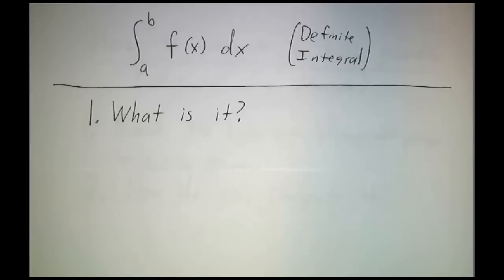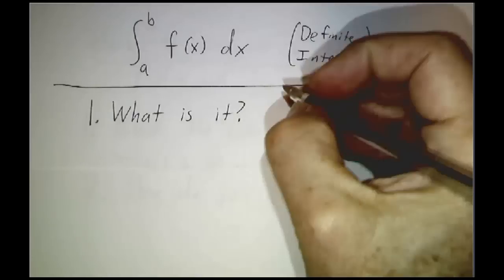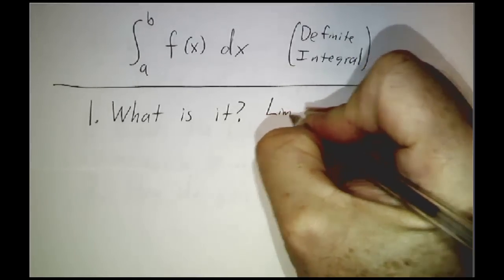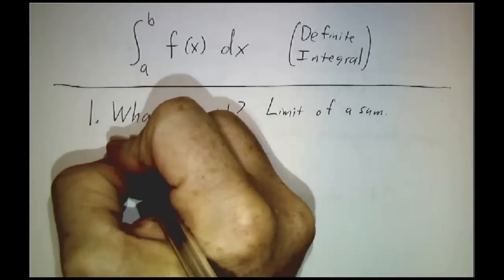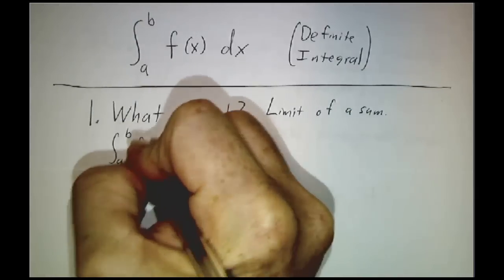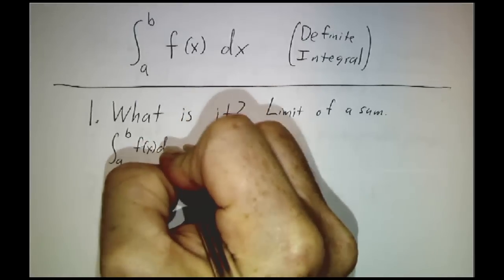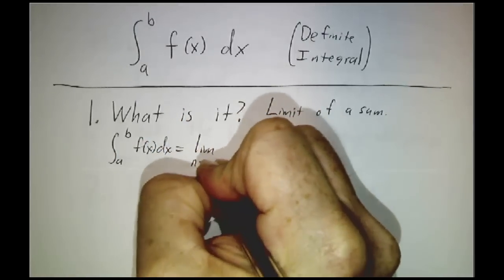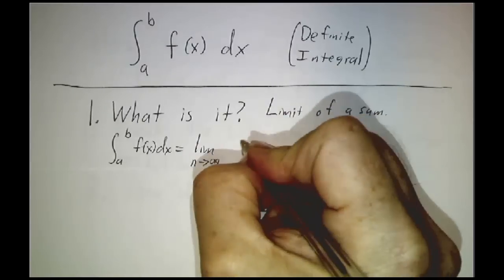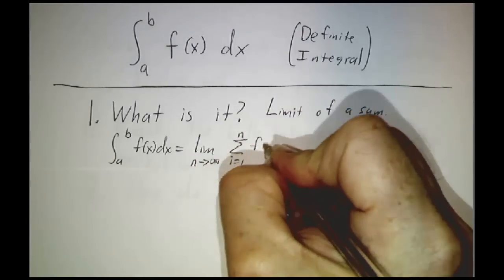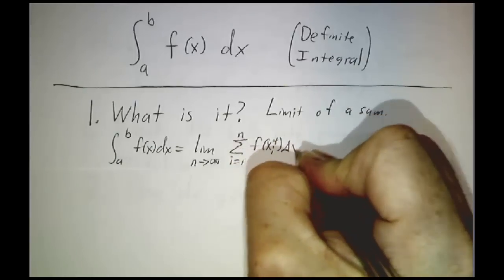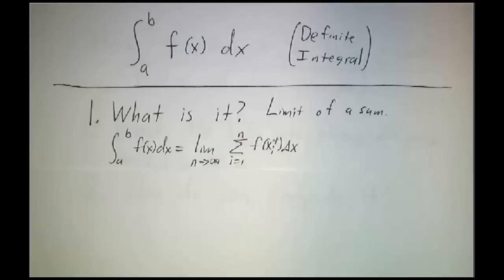The first is, what is it? And you have to remember that a definite integral is the limit of a sum. So the definition is that the integral from a to b of f dx is the limit as you chop things up into more and more pieces of the sum as i goes from 1 to n of f times delta x. We've gone through the whole procedure of how you figure out what delta x is, what xi star is, and so on, but it's a limit of a sum.